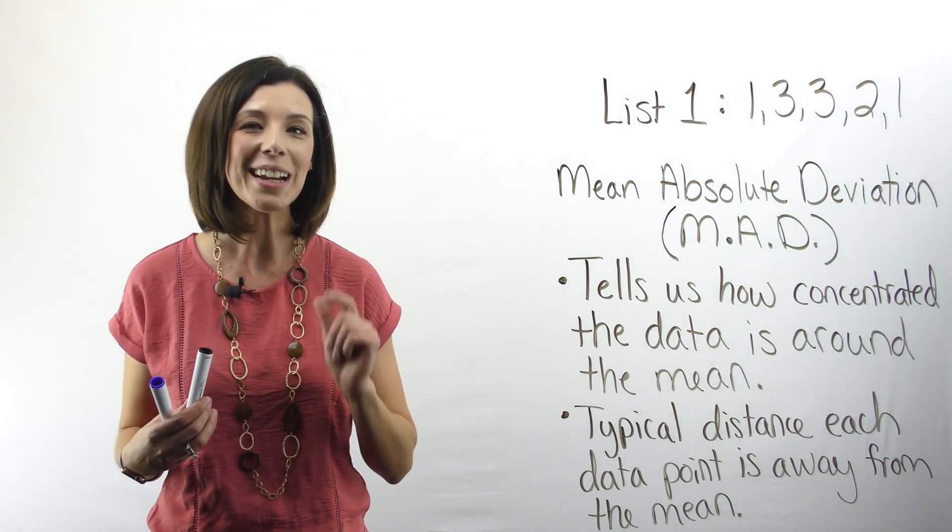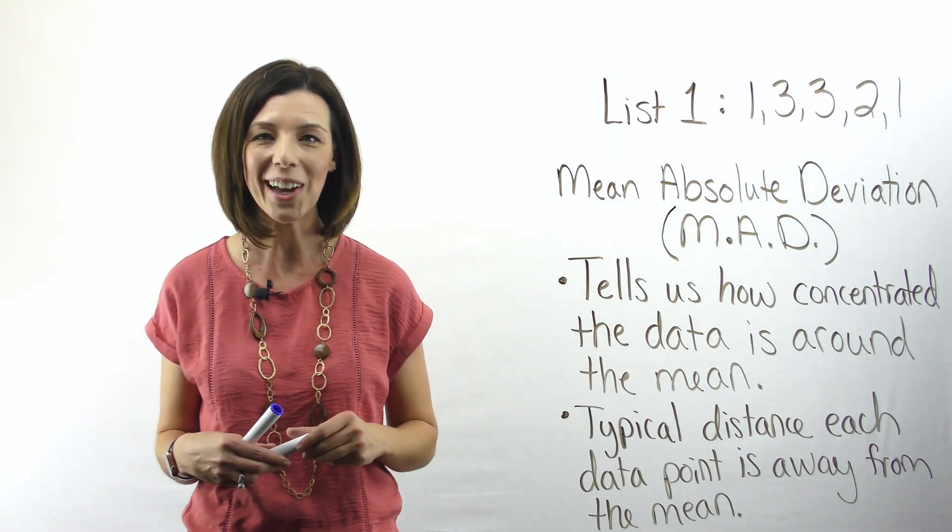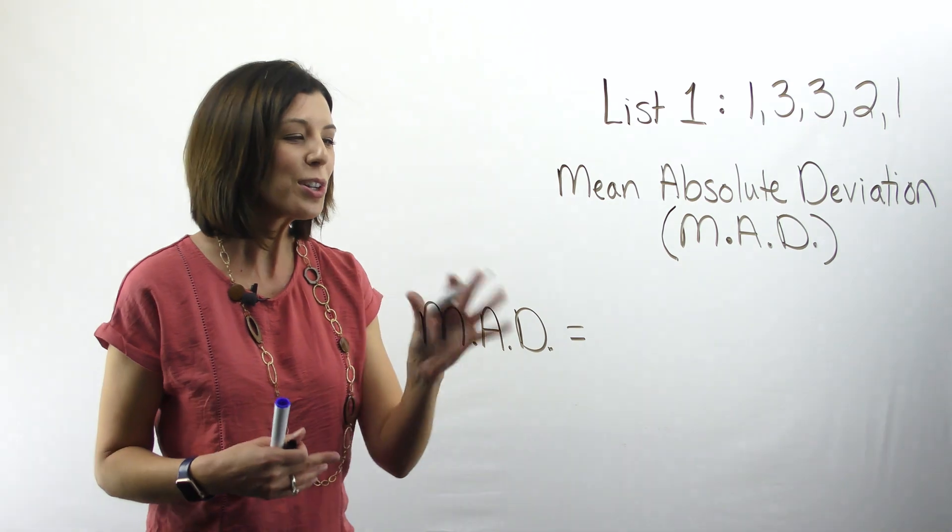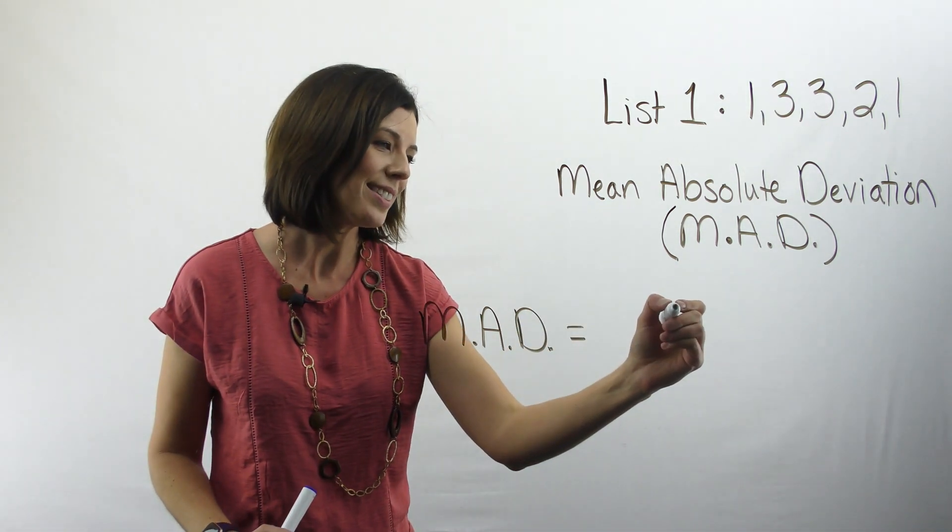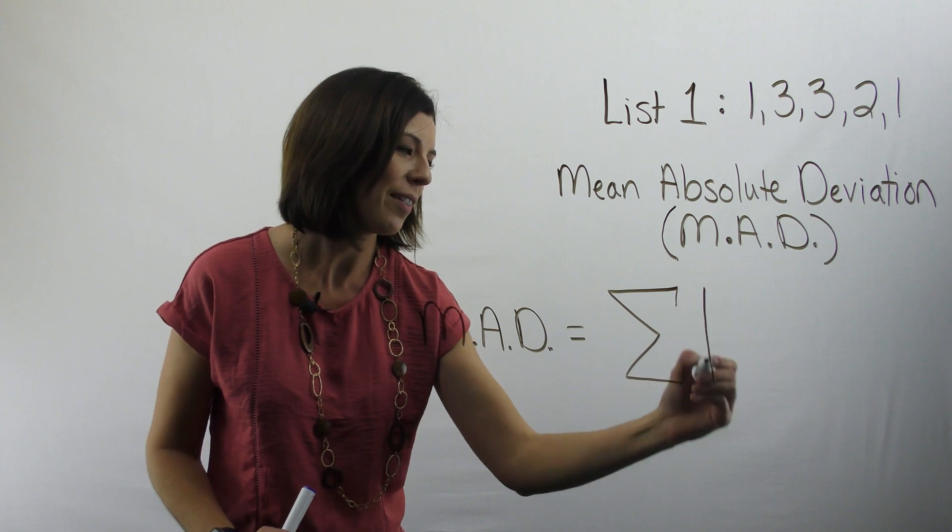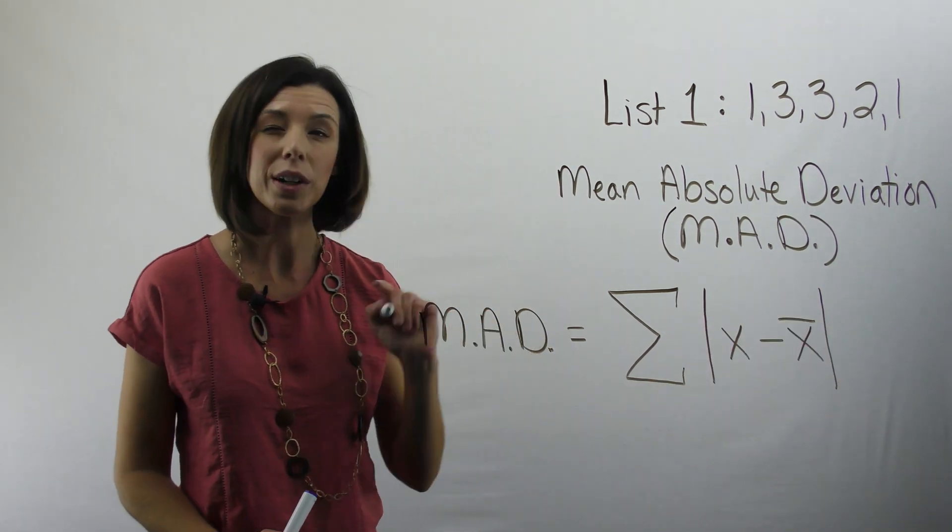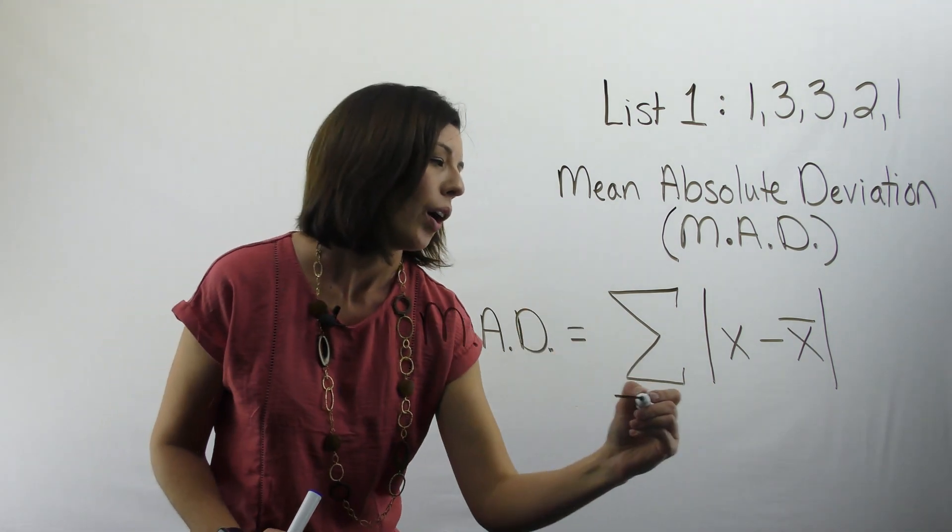Because now that you understand, I'm going to show you the formula and you're going to be like, oh, that makes so much sense. So here we go. Okay, so to find the MAD, I'm going to write this sigma, and then I'm going to have the absolute value of x minus x-bar. We're going to talk about what that means in just a minute, over n.